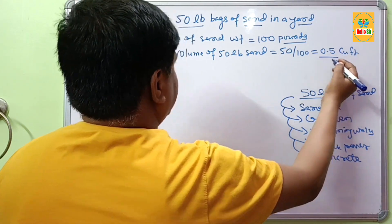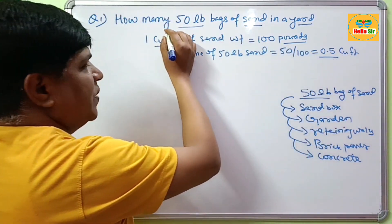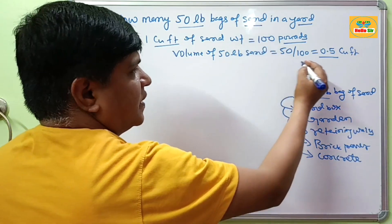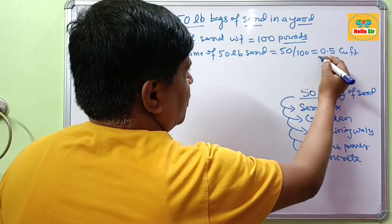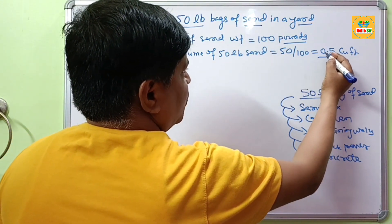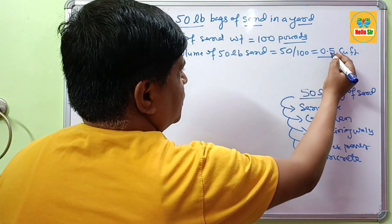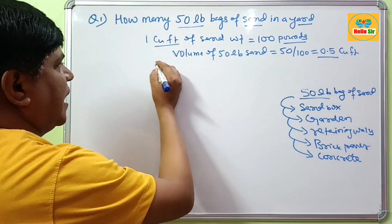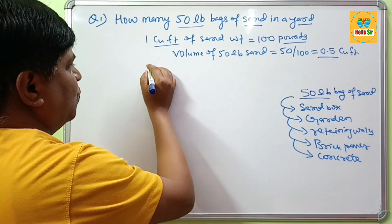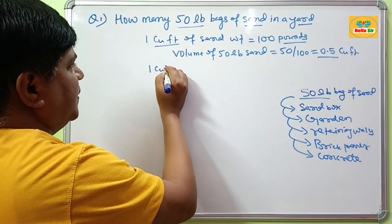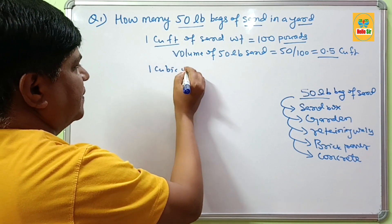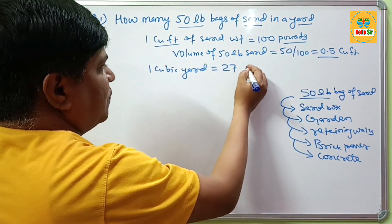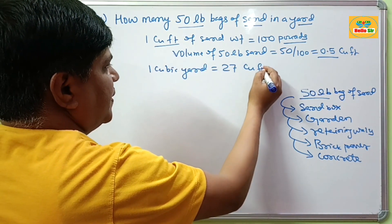That means a 50 lb bag of sand has a volume of about 0.5 cubic feet. And you know that 1 cubic yard is equal to 27 cubic feet.